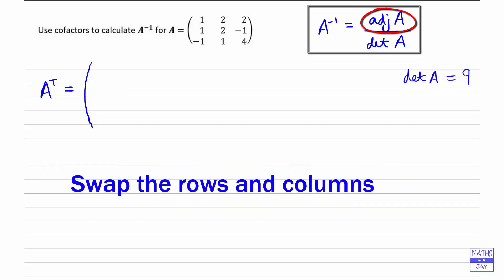So instead of 1, 1, minus 1 being the first column, it's the first row when we're looking at the transpose. So 1, 1, minus 1. And then the second row will be 2, 2, 1. And the third row will be 2, minus 1, 4.